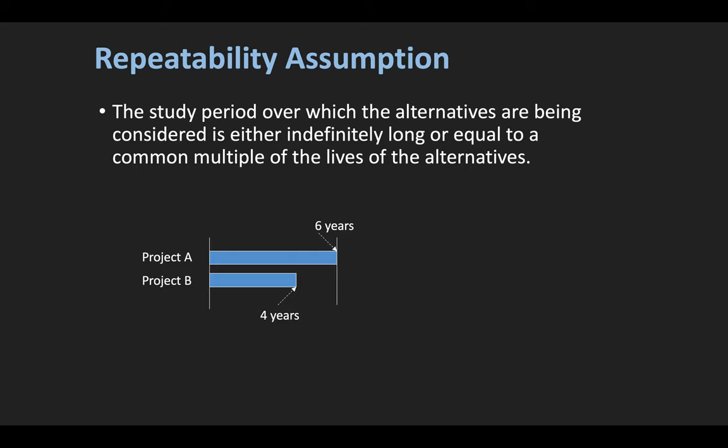Many times the convenient way is to find the annuity. It's hard to compare present value or future value directly, but we can compare annuities. For a six-year project, if we break it into an annuity we can find out what the revenue per year is. Project B is the same — we can find the annuity and then do the comparison using annual worth.